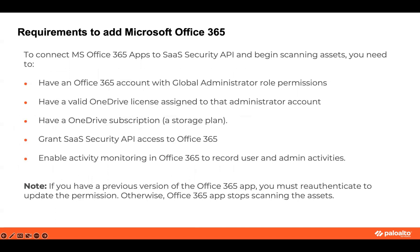Now let's review the requirements for adding Office 365. We need to have an Office Account Global Administrator role permissions. We also need a valid OneDrive license assigned to that administrator account. In addition, we need to have a OneDrive subscription, which is a subscription for a storage plan — the storage plan is separate from an Office 365 subscription. We need to grant SaaS Security API access to Office 365. An important step is to enable activity monitoring in Office 365 to record user and admin activities. Also, if you have a previous version of Office, you need to re-authenticate to update the permission; otherwise, the Office 365 app stops scanning the asset.